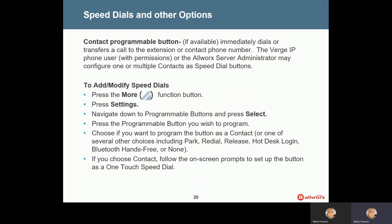From that point, you'll probably want to go in and program a speed dial on your phone — one of your available buttons — to be a speed dial to any contact. It can be to that new personal contact you just created, or it can be a speed dial to any of the existing AllWorks user contacts that are in the system.